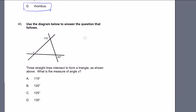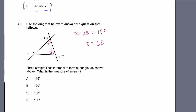Problem 40. Use the diagram below to answer the question. Three straight lines intersect to form a triangle as shown above. What is the measure of angle x? We use a couple of our angle rules — the angle game. We have 60 degrees here; the opposite vertical angle is also 60 degrees. This is 115 degrees, and it's supplementary to the adjacent angle, so that angle plus 115 equals 180. Subtracting 115 from both sides gives that angle equal to 65 degrees.